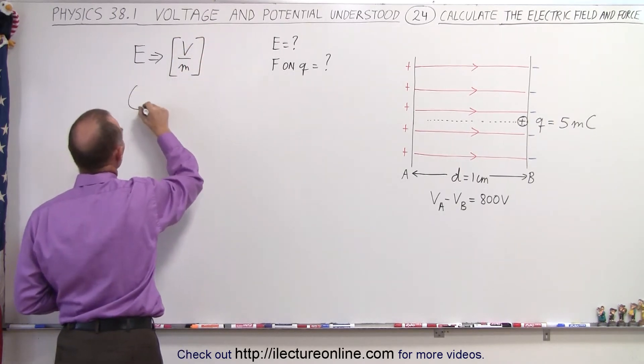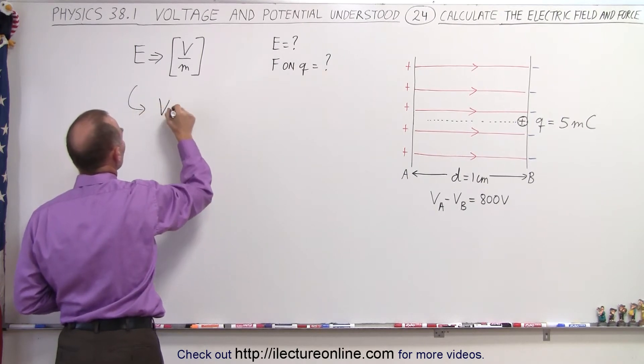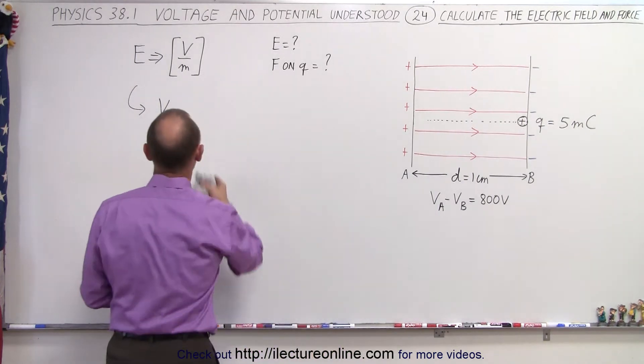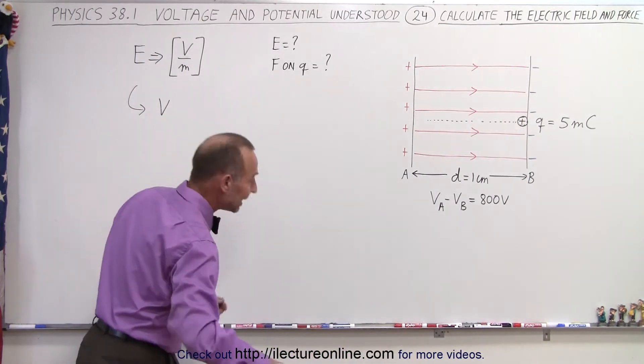From this we can realize that the potential difference is going to be equal to, and maybe when we write potential difference I may want to write it as follows, the voltage between A and B.